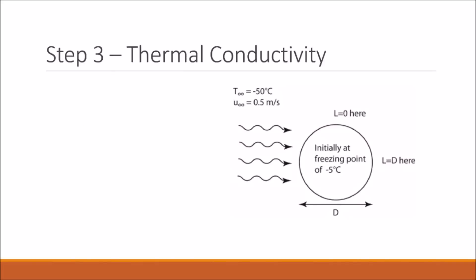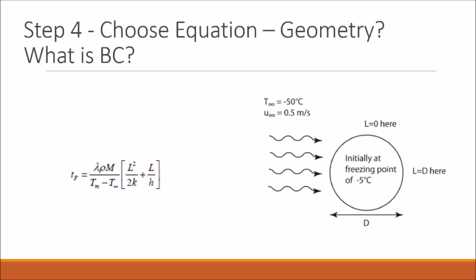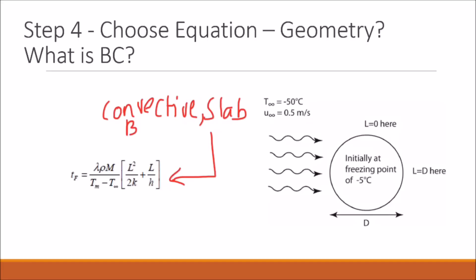Now we determine the thermal conductivity of the paddy. We're told that the thermal conductivity of the frozen paddy is 1.4 watts per meter kelvin, and this is just given in the problem. The next step is to choose the equation given the geometry and boundary condition. Because the thickness dimension of the paddy is much smaller than the radial dimension, we treat the paddy as a slab. We also know we can't ignore the effects of convection, so we use the equation from the textbook for a convective boundary condition for a slab, and plug in all our unknowns to solve for the freezing time.